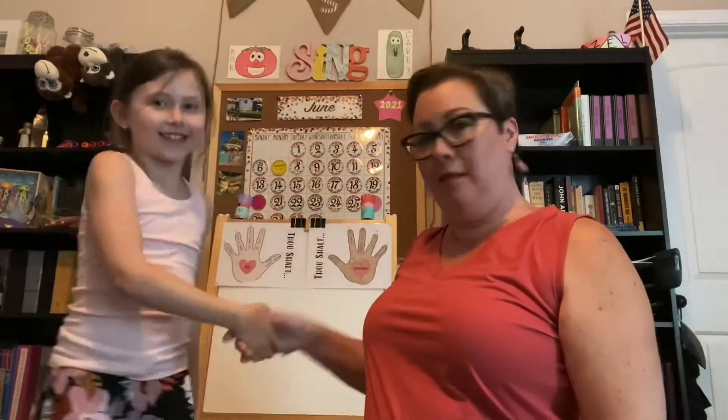Now the second set, 6 through 10 — this is Week 2 — is going to be about our neighbor. And we need two hands to make 6, 7, 8, 9, and 10, just like we need two hands to shake our neighbor's hand. So the second half of the Ten Commandments is about our neighbor.